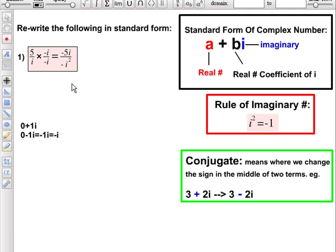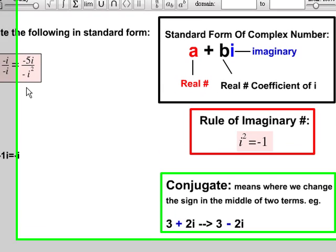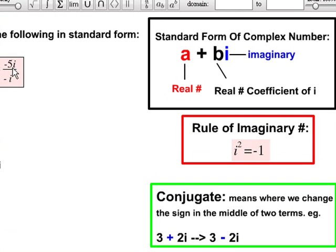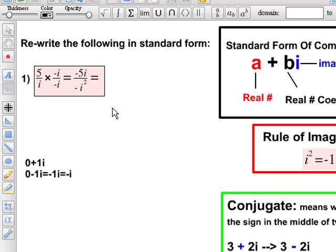OK, so if we take a closer look, we can simplify this term now, because as you can see the rule of imaginary, i squared is equal to negative 1. So, we can basically substitute i squared with negative 1 in the denominator. So the numerator is going to stay the same, and the denominator is going to change into negative 1.